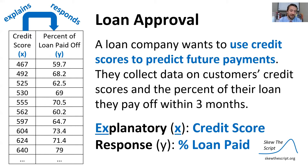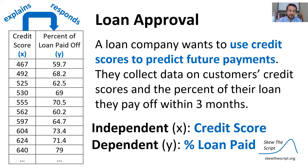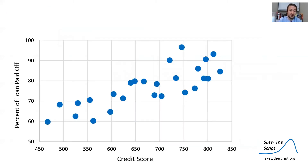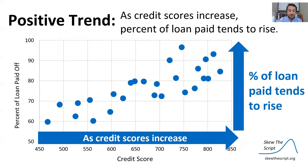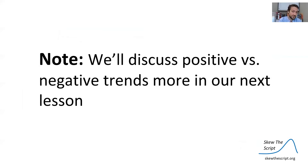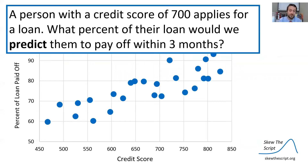These are written as our X and Y variables. A good way to remember is X-EX matches to the X variable. You can also think of these as the independent and dependent variables. Here's a chart of the data, with credit score on the X axis and percent of loan paid off on the Y axis. It seems to be a positive trend — as credit scores increase, the percent of loan paid tends to rise. We'll discuss positive and negative trends more in our next lesson.